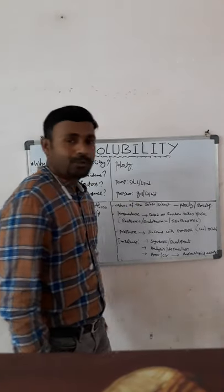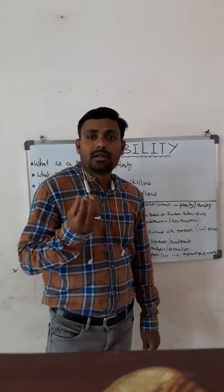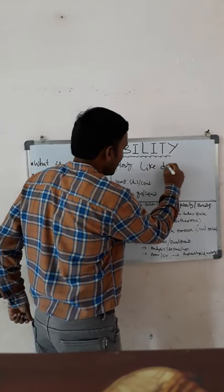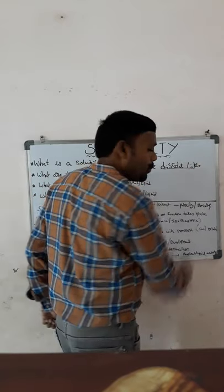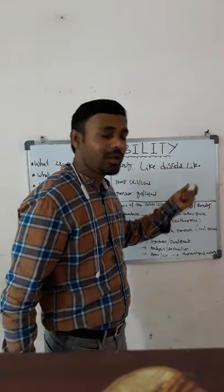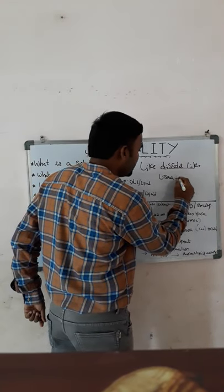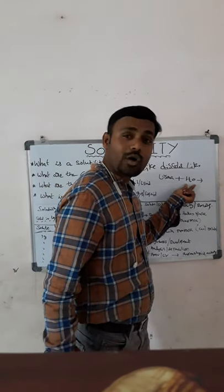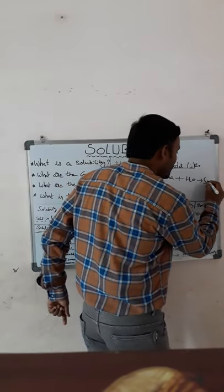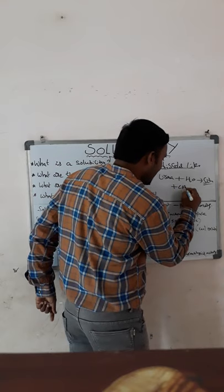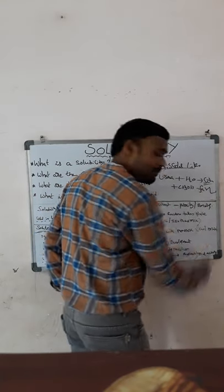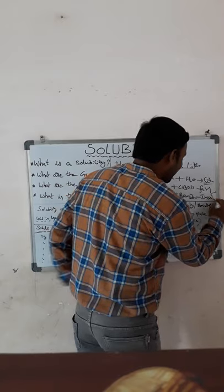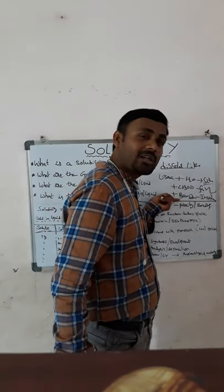Regarding the nature of the solvent or solute: one key chemical property is polarity. We know the principle 'like dissolves like' — polar dissolves polar, and non-polar dissolves non-polar. For example, urea is highly polar and water is also a highly polar solvent, so urea is highly soluble in water. If you take urea in methanol, it is fairly soluble. But if you take urea in benzene, which is a non-polar solvent, it is insoluble.